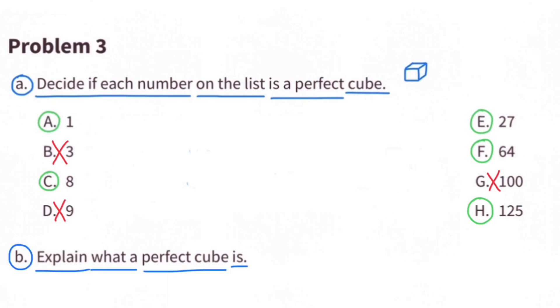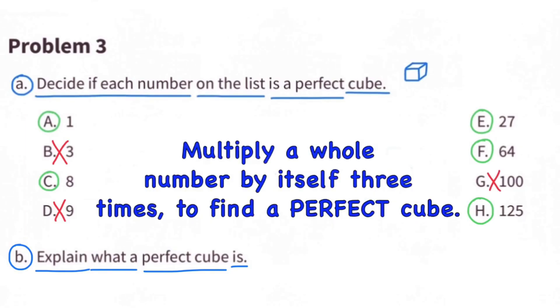Part B. Explain what a perfect cube is. Multiply a whole number by itself three times to find a perfect cube.